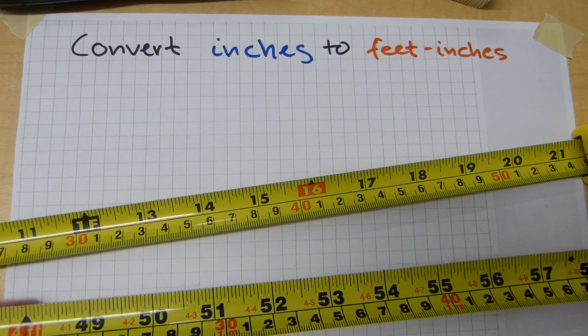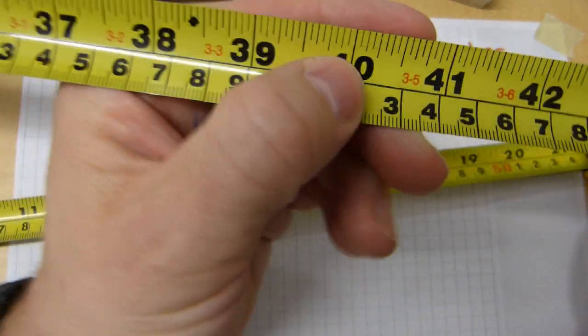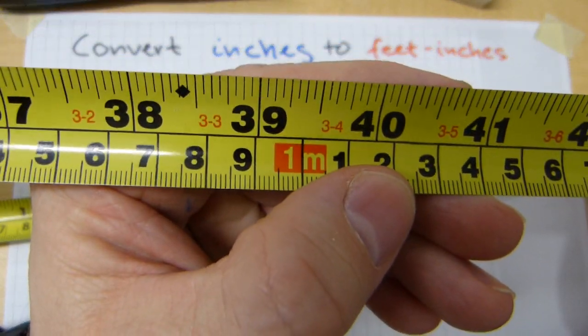The approach on tape measure is fairly straightforward. Some tape measures come with the measurements both in inches and feet and inches printed on them. Very easy.